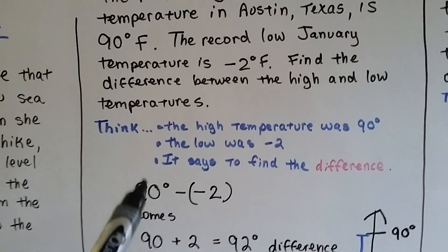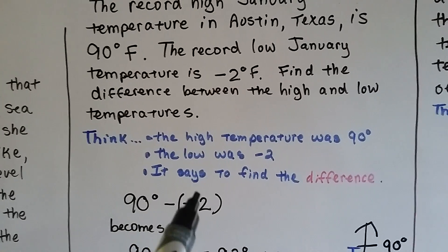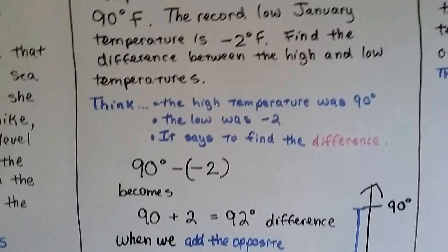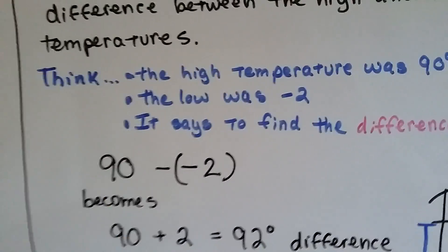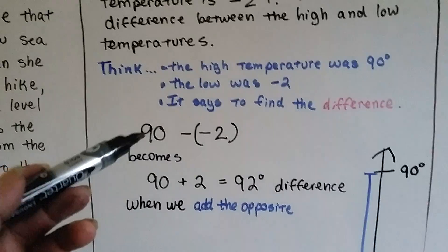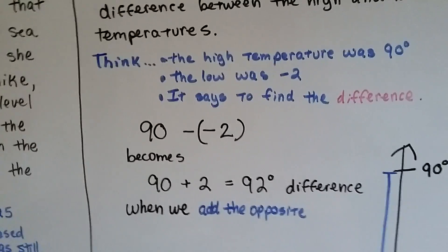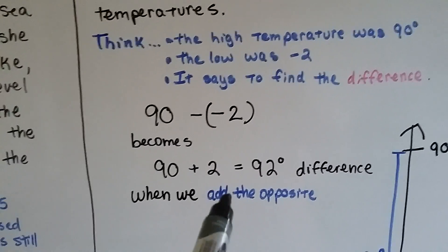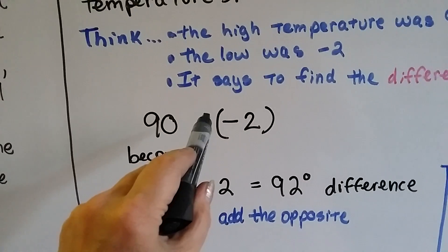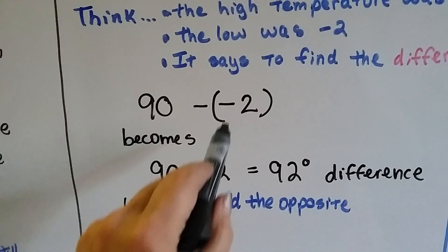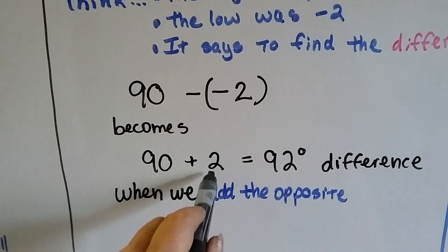So, we've got 90 degrees, and we need to take away a negative 2. Alright? In fact, we don't even need the degrees at this point. We could put it on at the end. We just have a 90 minus negative 2. So remember, we add the opposite. So this minus sign is going to become a plus sign, and this negative 2 is going to become a positive 2.